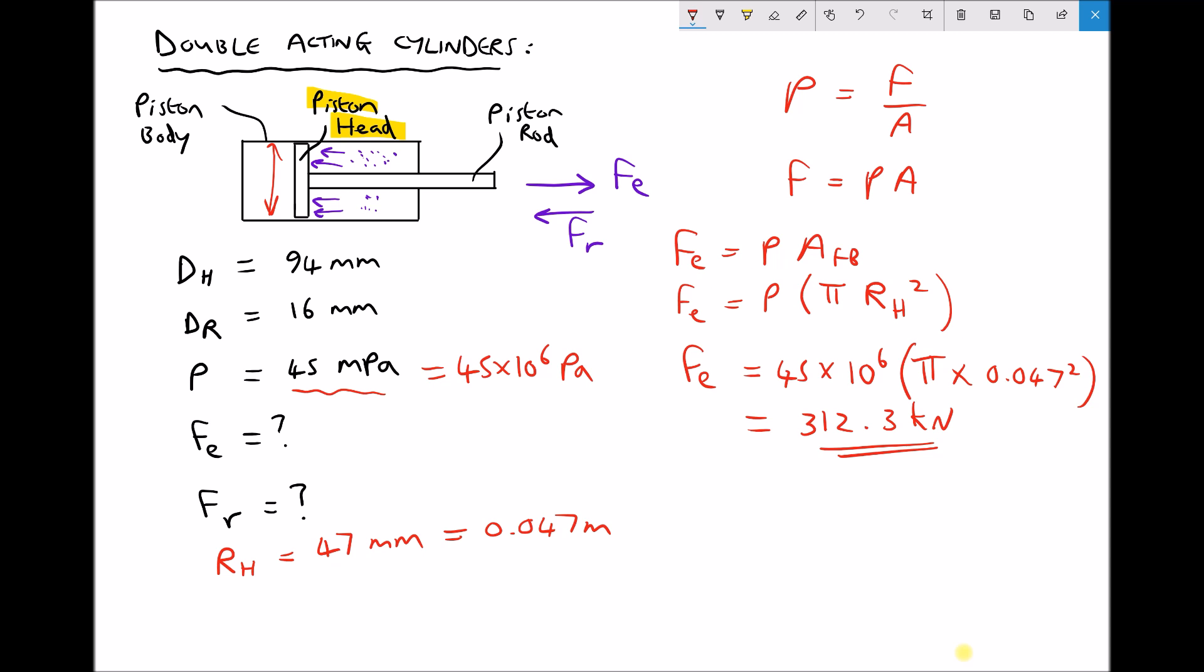As we said previously, we would expect the retraction force to be less than the extension force because the pressure acts across a smaller area. So let's do that calculation now. The force of retraction equals the pressure times the area of the annulus this time. I'll just put subscript an to represent annulus.